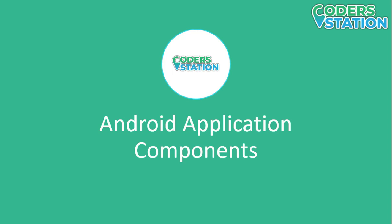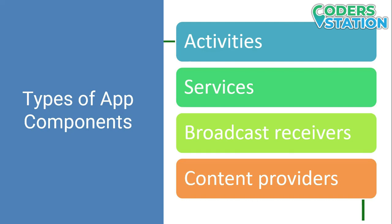Some components depend on each other. There are four different types of components available: Activity, Services, Broadcast Receiver, and Content Provider. Each type serves a distinct purpose and has a distinct life cycle that defines how the component is created and destroyed.